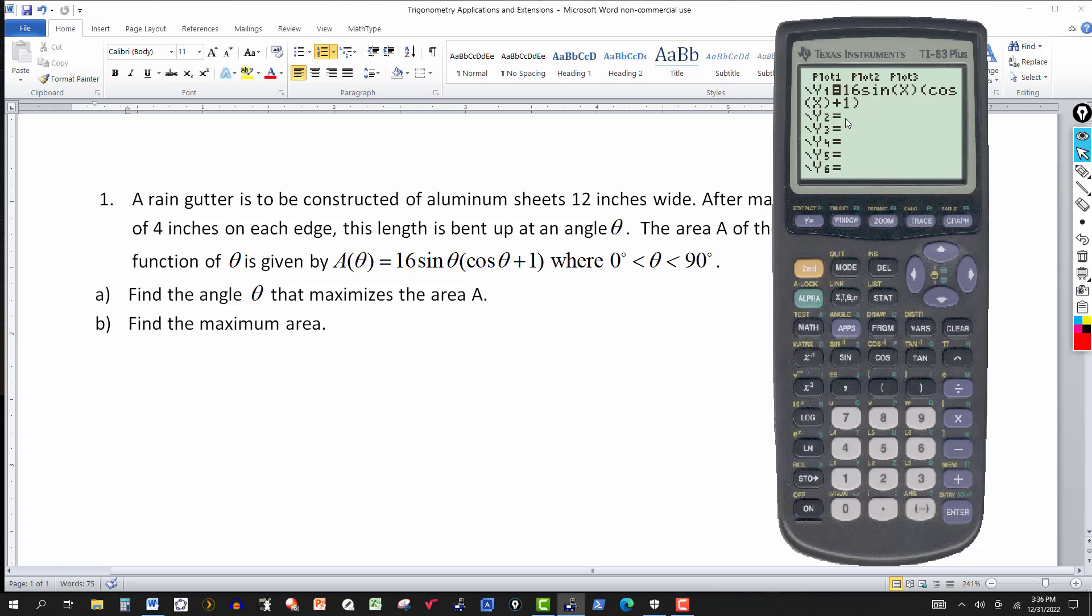There it is. 16. Now just to make it easier, I'm using x here, but that x is the same thing as the theta. It's just a variable. So 16 sine of x times parentheses cosine of x plus 1. And what I did here, I went to the window.